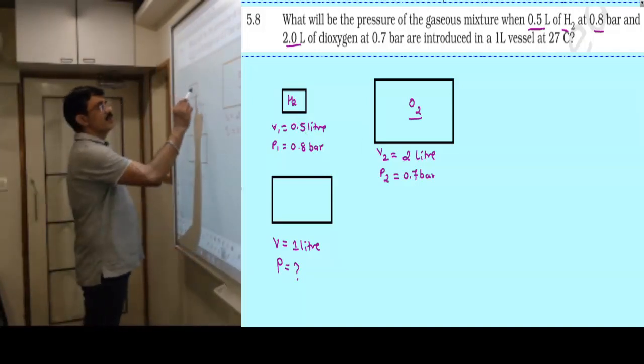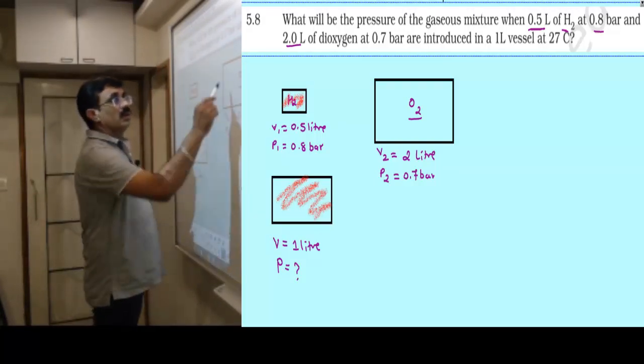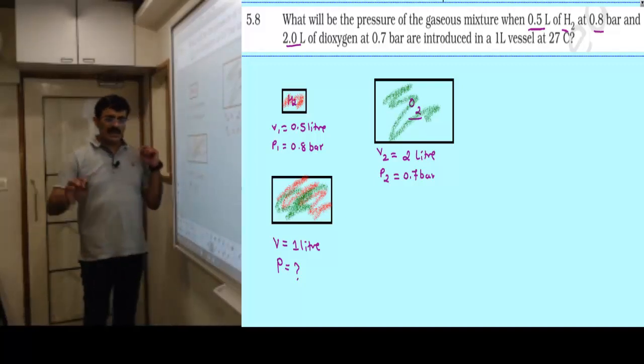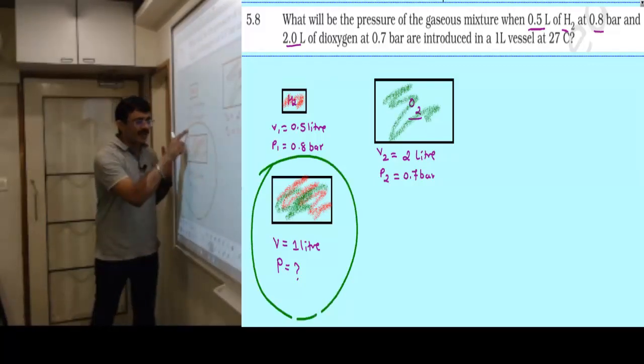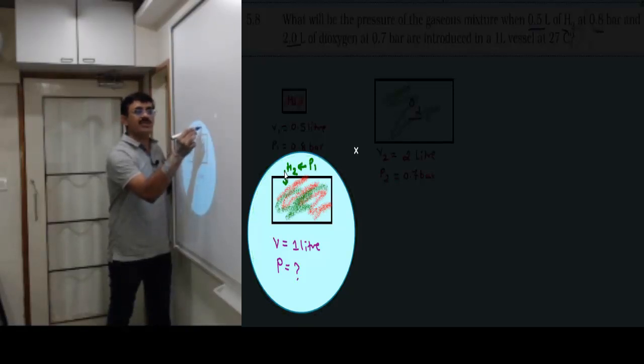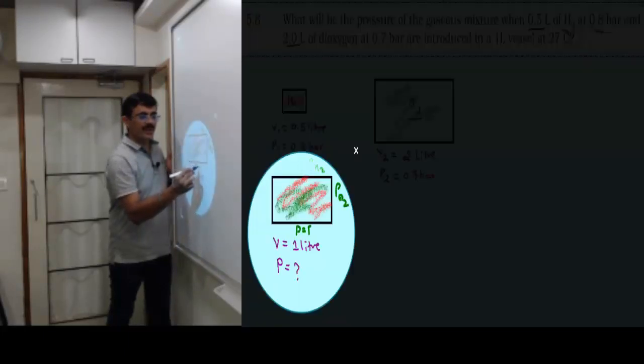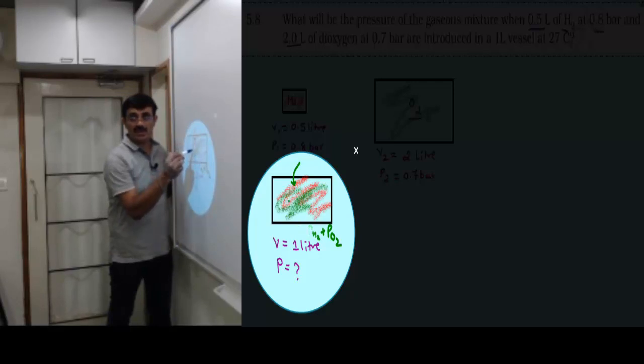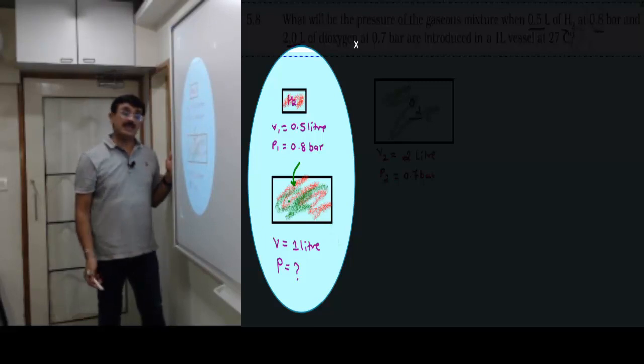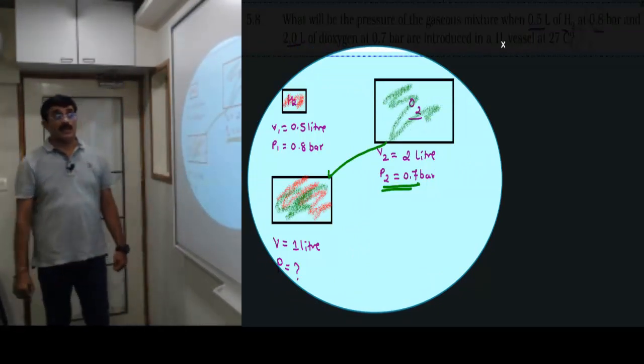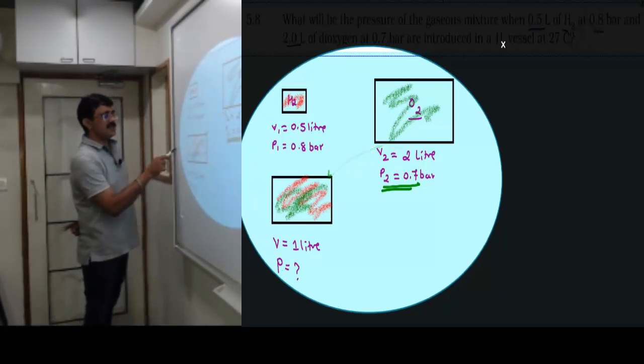The first container has volume 0.5 liter with hydrogen gas at pressure 0.8 bar. The second has dioxygen O2 with volume V2 equals 2 liter and pressure 0.7 bar. These are combined into final volume of 1 liter. What is the pressure when we put hydrogen and oxygen into this final container?